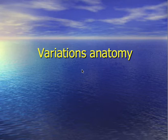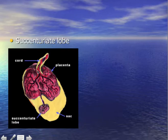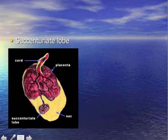Variations in the anatomy. Here we have a placenta with a so-called succenturiate lobe. That means you will see the umbilical cord, the main placenta, and there's a small island in front of the coast — that's the small lobe here. In the membranes, here depicted as yellow, we see blood vessels. This is a situation where it's important that we check that the placenta is complete.